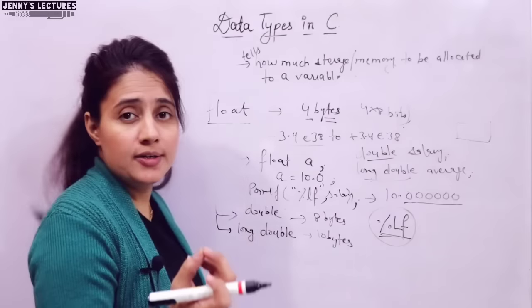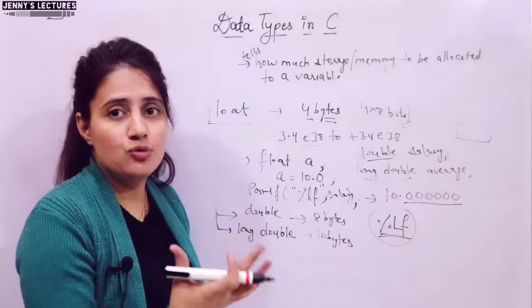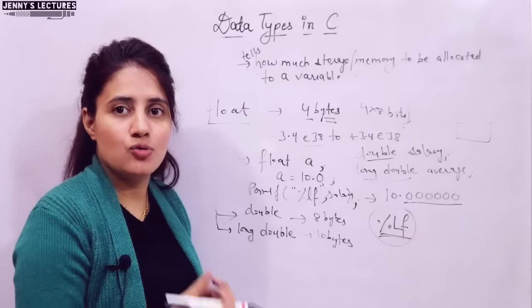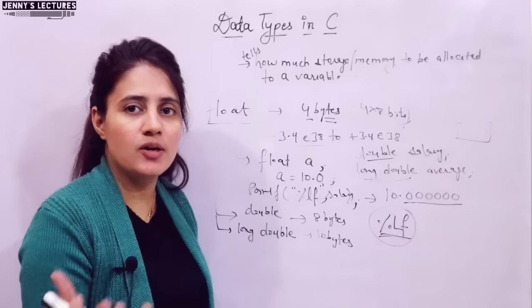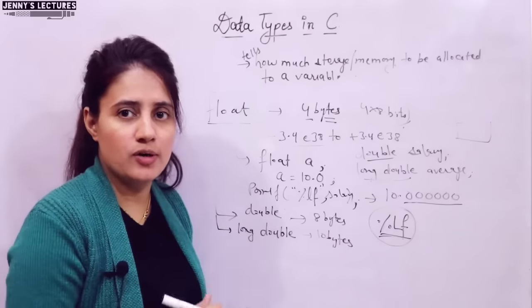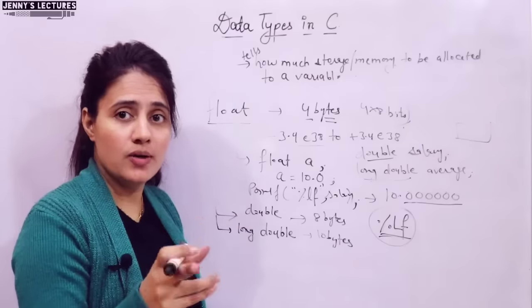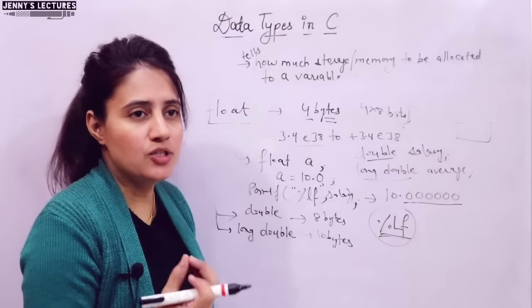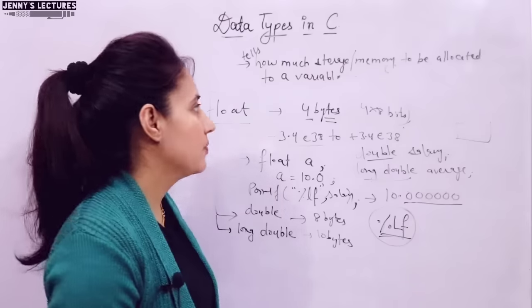Next is our void data type. But void is not used with variables — void means empty, nothing is there. We generally use this data type with functions. If a function does not return any value, then we declare that function as void. It is a special data type which cannot store any constant value.